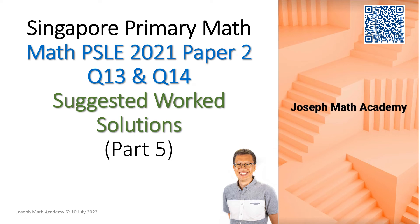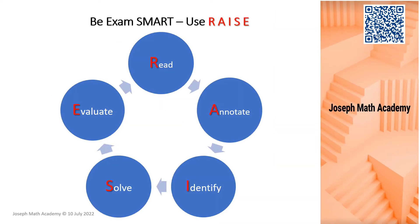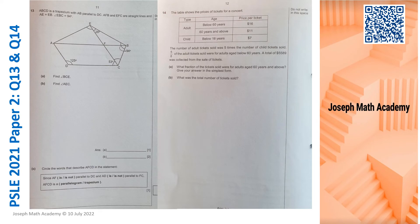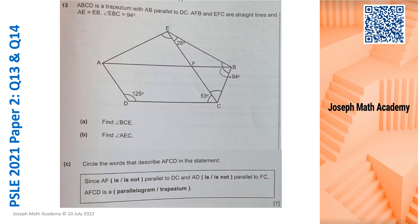Hello everyone. Welcome to today's video on Math BS Sully 2021 Paper 2 Questions 13 and 14. If you have been following me, this is the exam smart strategy that I am always adopting. And these are the two questions that we are going through today — Questions 13 and 14. Now question 13 is a geometry question involving the angles in a triangle and in a four-sided figure, in this case a trapezium. Now let's begin.